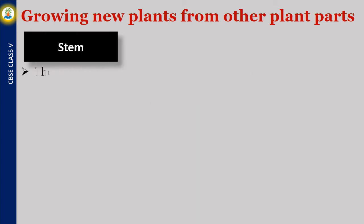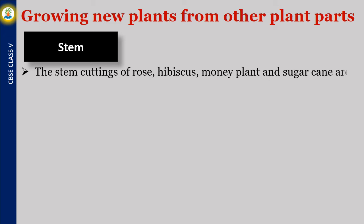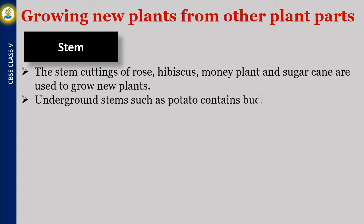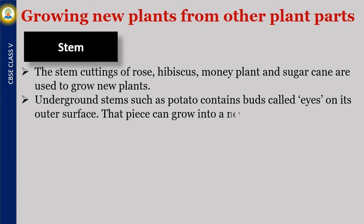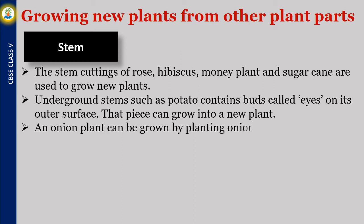Stem. The stem cuttings of rose, hibiscus, money plant, and sugarcane are used to grow new plants. Underground stems such as potato contain buds called eyes on their outer surface, and each piece can grow into a new plant. An onion plant can also be grown by planting an onion in soil, as an onion is also a stem.